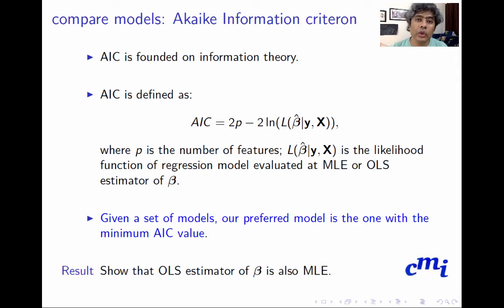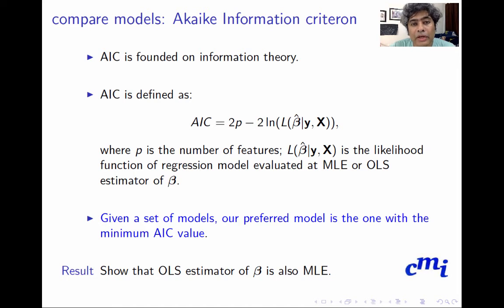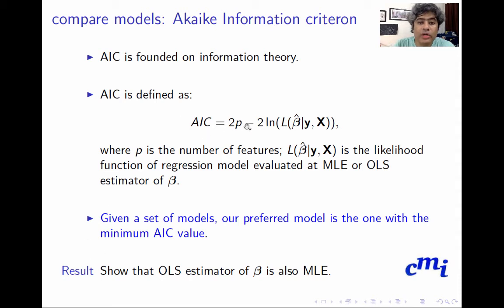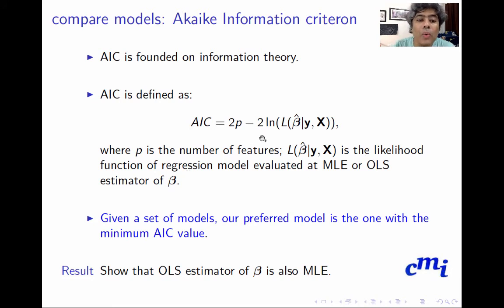Another group of popular model selection criteria is the information criteria. The famous Japanese statistician Akaike developed the first such criterion, known as Akaike Information Criterion or AIC. Founded in information theory, AIC is defined as: AIC = 2p − 2·log L(β̂ | X, y), where p is the number of features and L(β̂) is the likelihood function of the regression model evaluated at the MLE or OLS estimator.